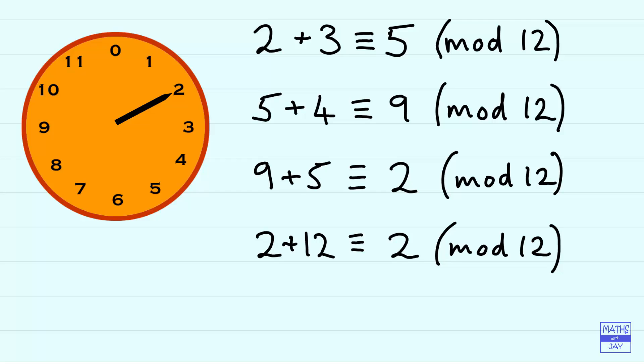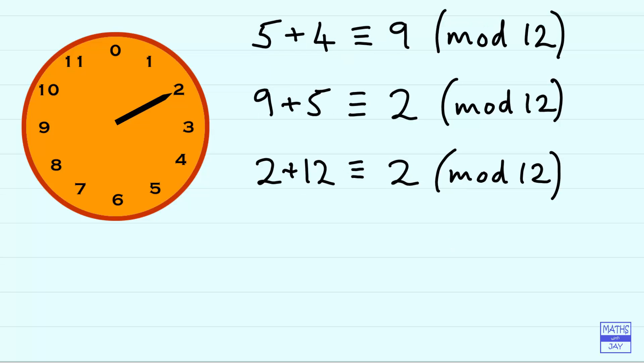But we could take it further and, for example, add 30 onto 2. So in ordinary arithmetic we'd get 32. But here you can see that 2 plus 30 is congruent to 8 mod 12.